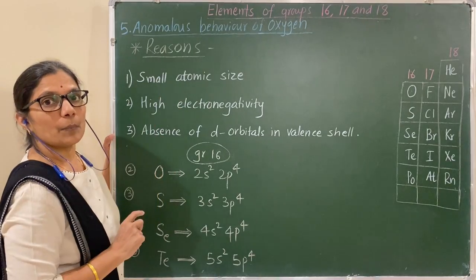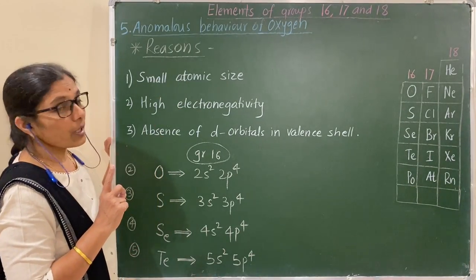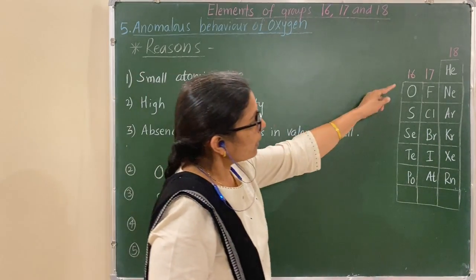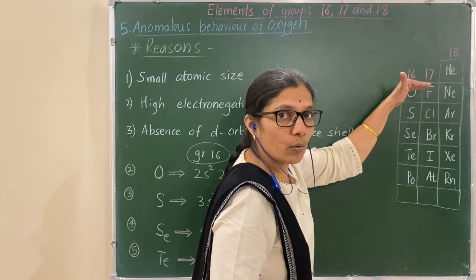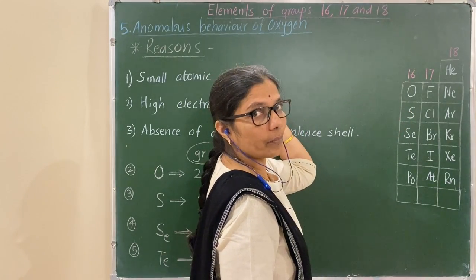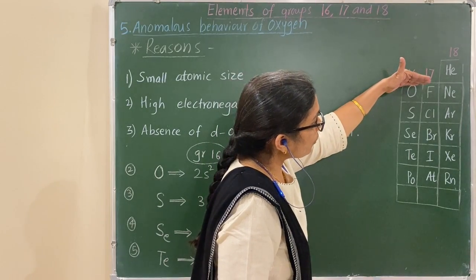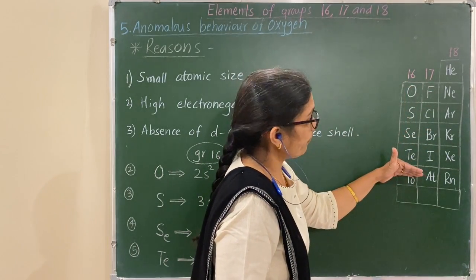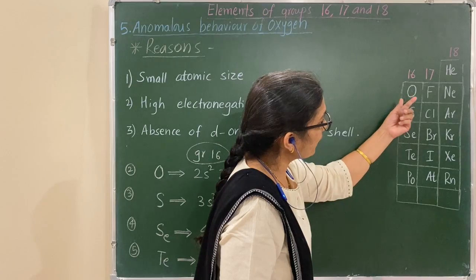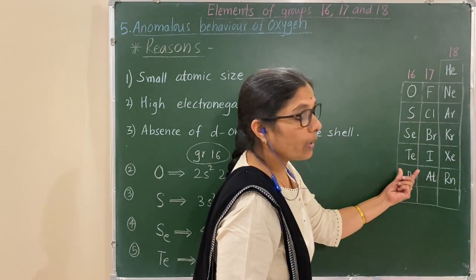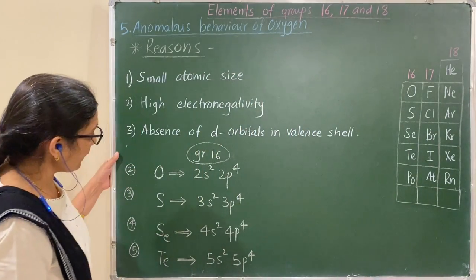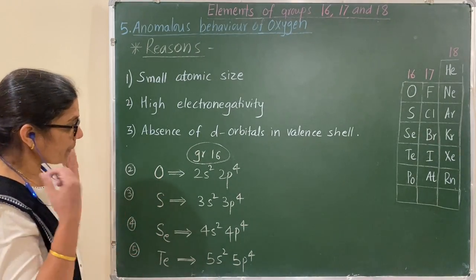First, let us consider the anomalous behavior of oxygen and its reasons. First point: in this group, atomic size goes on decreasing, meaning oxygen has a small atomic size — that is the first reason. Second, electronegativity also decreases down the group, meaning oxygen has the highest electronegativity among these elements. That is, it has high electronegativity.